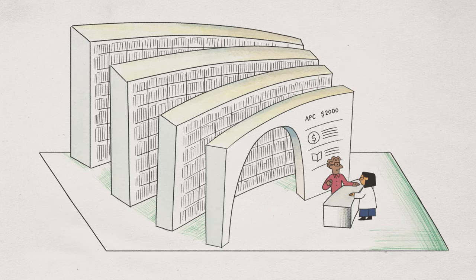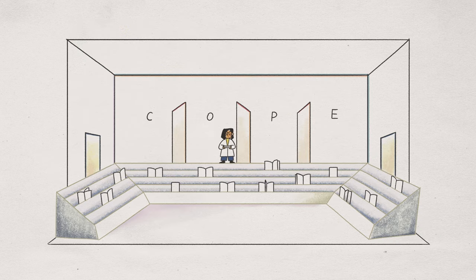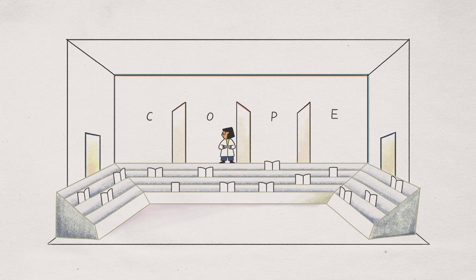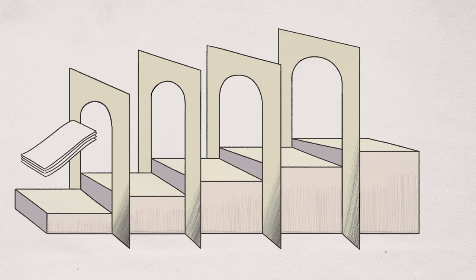Open journals should have transparent, reasonably priced open access options, waiver schemes, and open data mandates. Ethical journals will adhere to the Committee on Publication Ethics guidelines, have clear ethics policies, and only publish research that adheres to these standards.